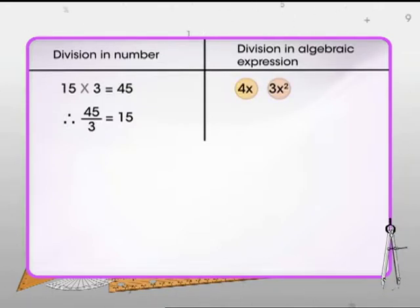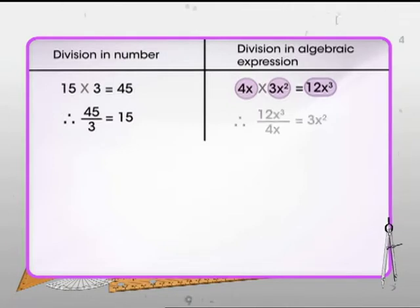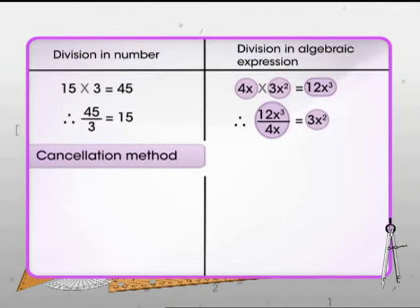The same holds good in case of algebraic expressions too. Let's consider two monomials: 4x and 3x squared. Now 4x multiplied by 3x squared gives 12x cubed. Therefore, 12x cubed divided by 4x equals 3x squared.